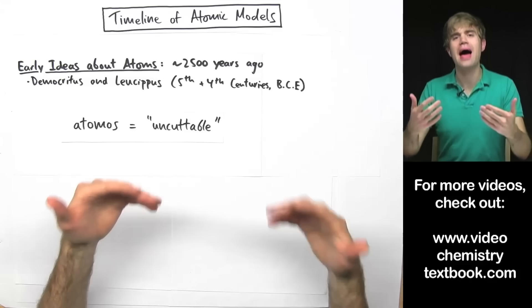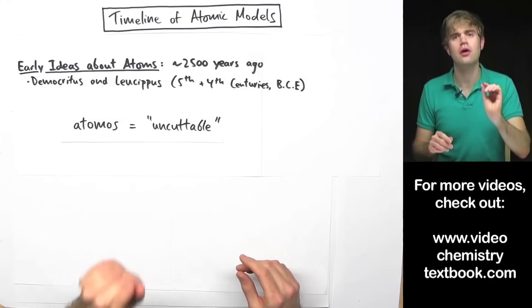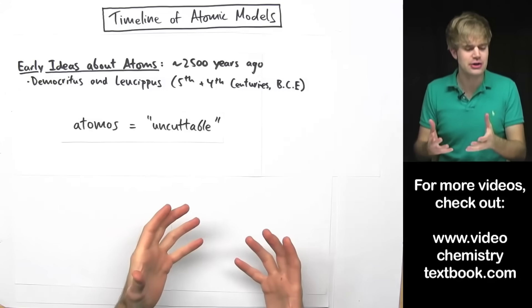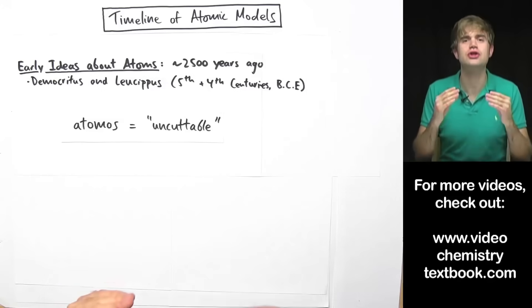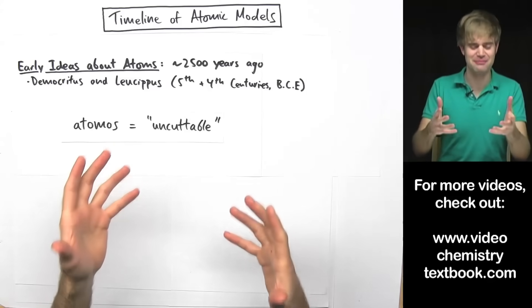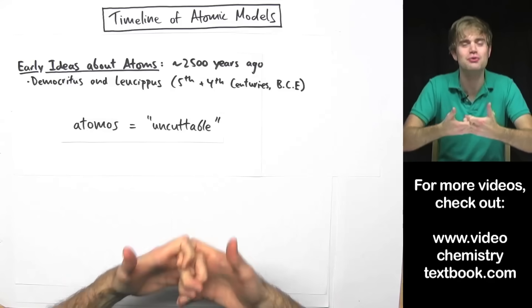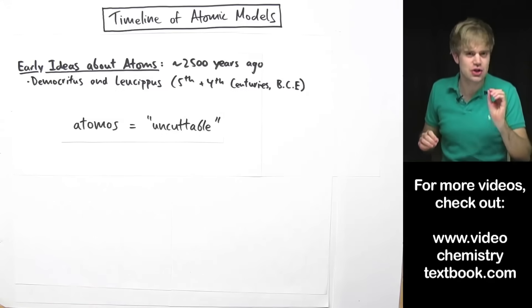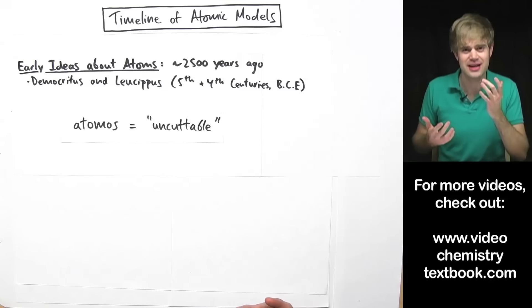Democritus imagined that all matter, all stuff, was made of these tiny uncuttable particles. And he imagined that the atoms came in different sizes and different shapes. He imagined, for example, that iron atoms had hooks, which is how they could hold together so strongly. And he thought that salt atoms had spikes on them because he felt that salt tasted sharp.